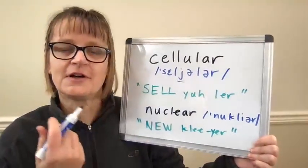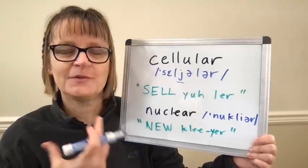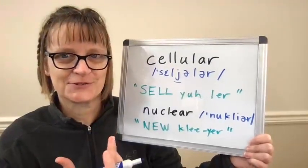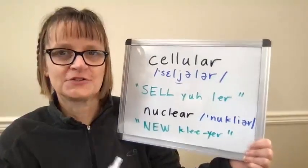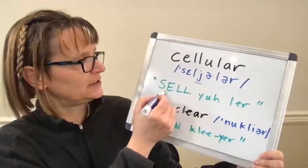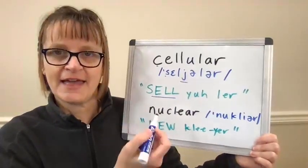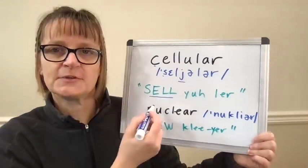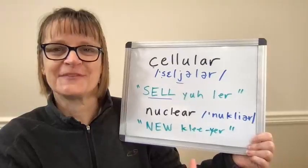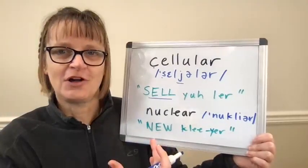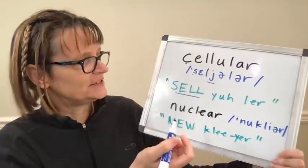Cellular is also difficult because it has L's and R's in the same word, which can be challenging for many speakers. The word 'cellular' is stressed on the 'cell' syllable, and the letter C says the S sound. We have the 'eh' red-tent vowel, so it's just like the word 'cell' as in to sell someone something, or we often call cellular phones just 'cell phones.'